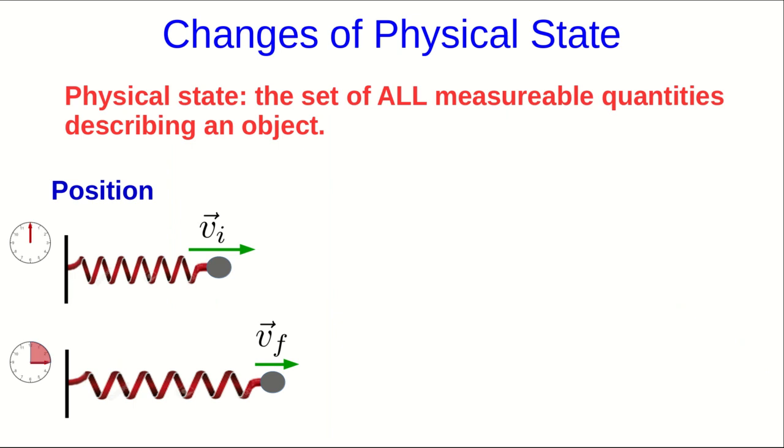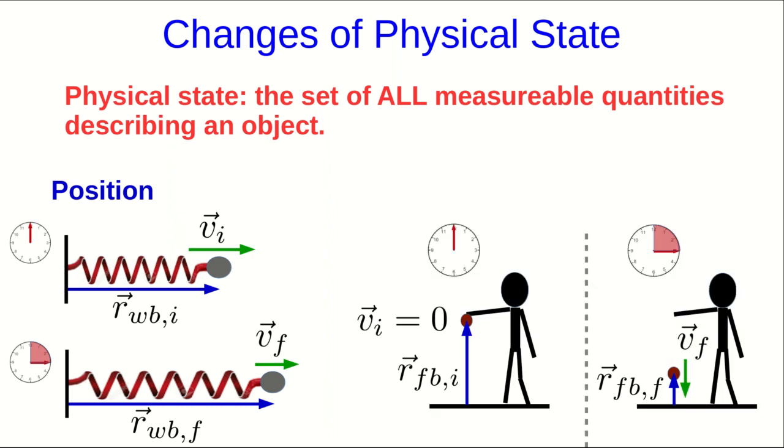For an object on the end of a spring, its speed is changing. And so kinetic energy must be converting back and forth with some other form of energy. And that form of energy must depend on the relative position between the ends of the spring, or in this picture, the relative position of the ball with respect to the wall. Or similarly, if you drop a ball, it speeds up as it goes down. And so there must be some exchange between the kinetic energy and a form of energy that depends on the relative position of the ball relative to the floor.